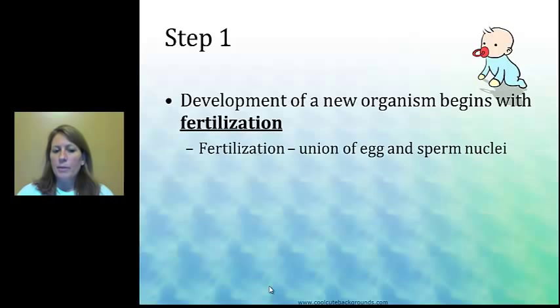Going back to the cleavage diagram: the development of a new organism begins with fertilization, which is the union of the egg and the sperm. Then it becomes a zygote and goes through cleavage — hopefully this sounds familiar — then morula, and then blastula.